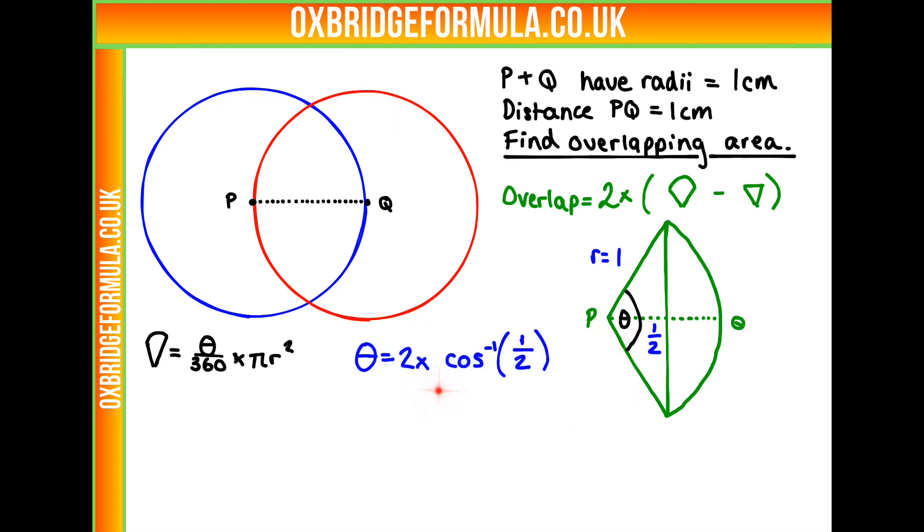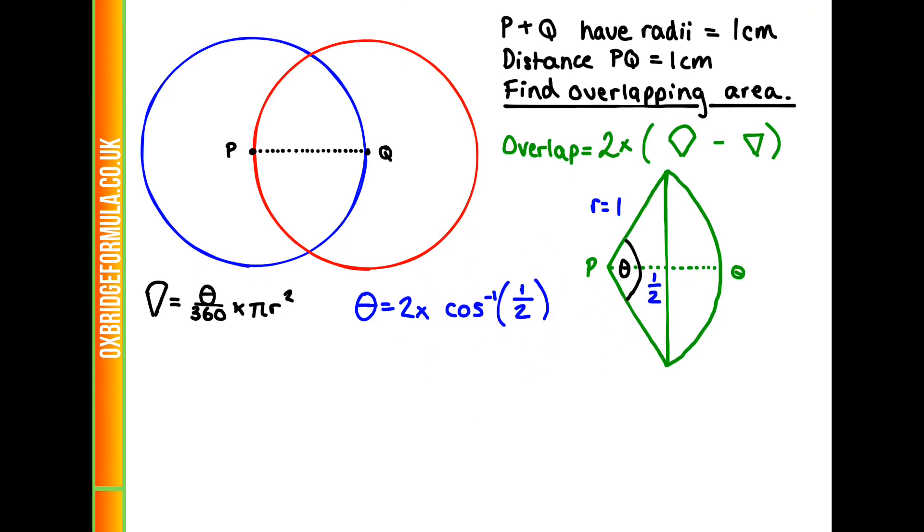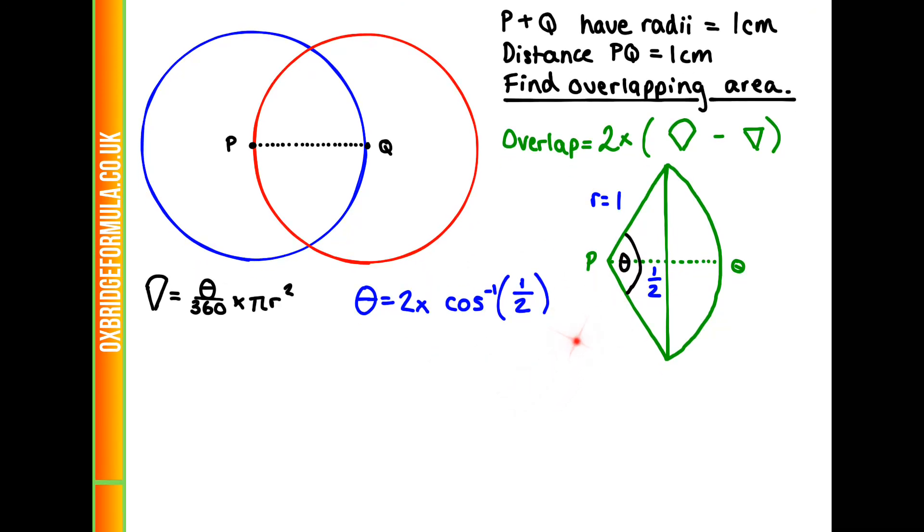So our theta is going to be 2 times the cos of a half over 1, or just a half. That's the adjacent divided by the hypotenuse there. We can use our trigonometry triangles. To get to a half, we're going to have to do our 1 over 2 there. So that's going to be the cos of 60. So that's 2 times 60, or 120 degrees is our theta angle there.